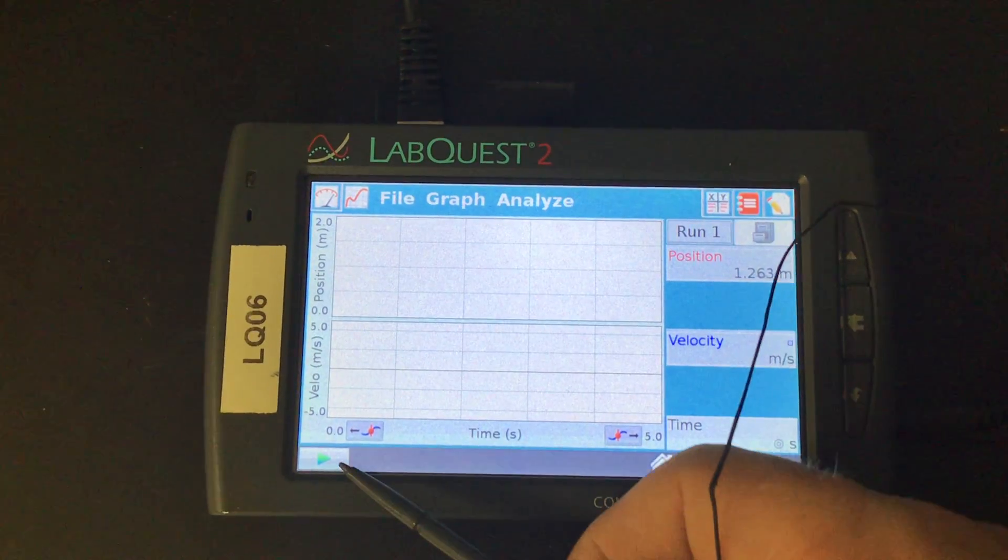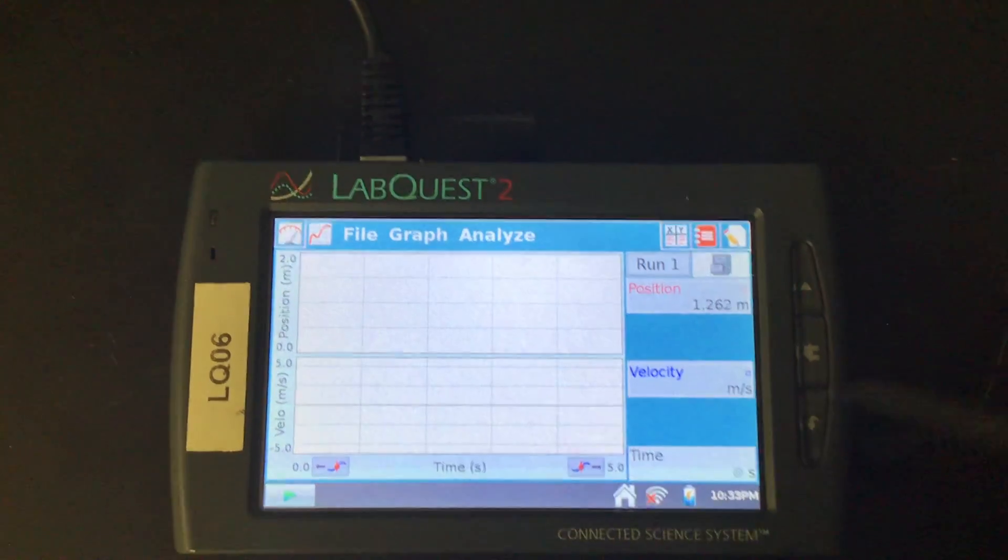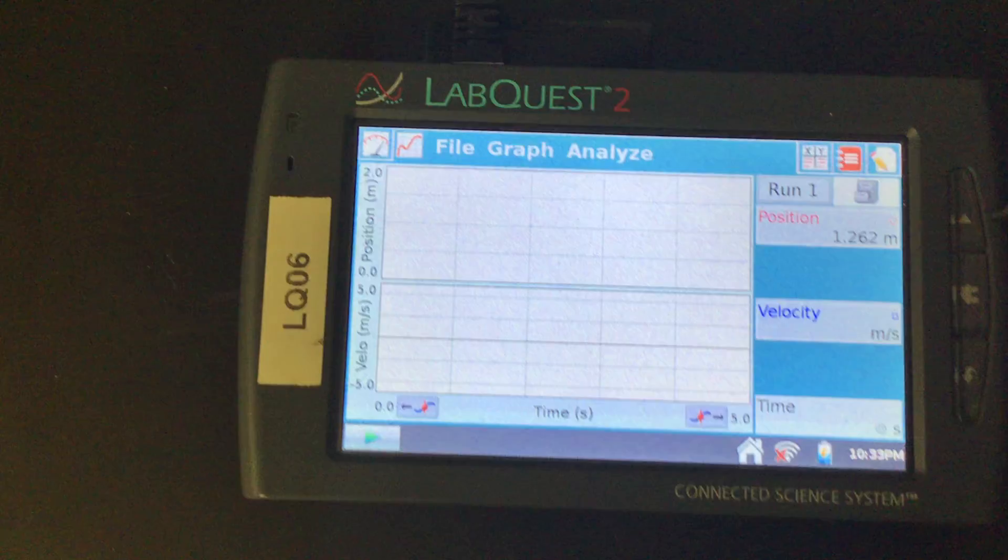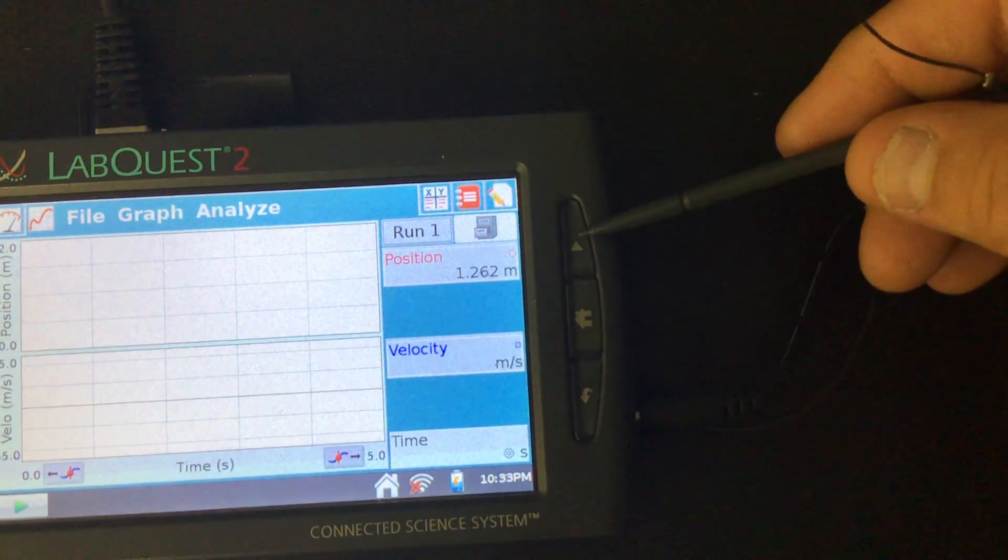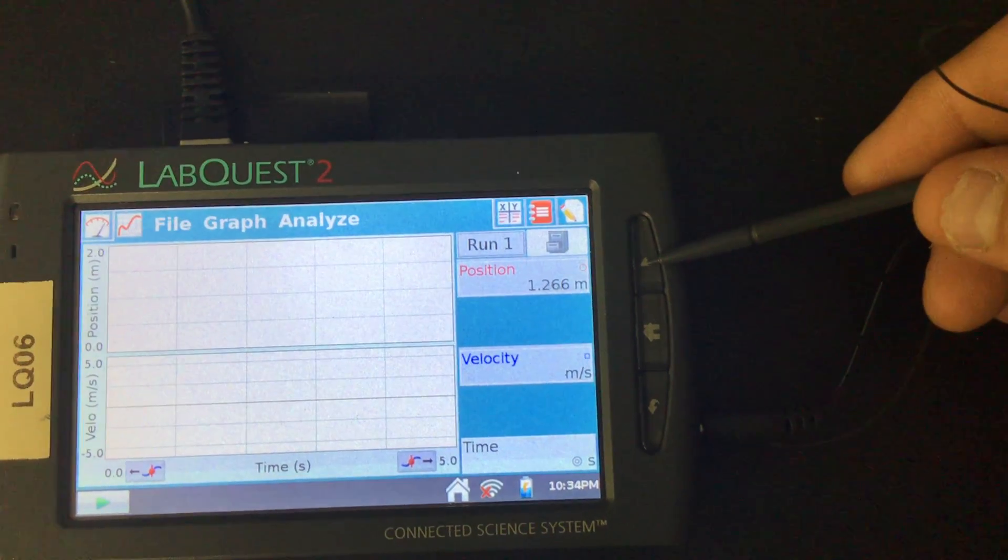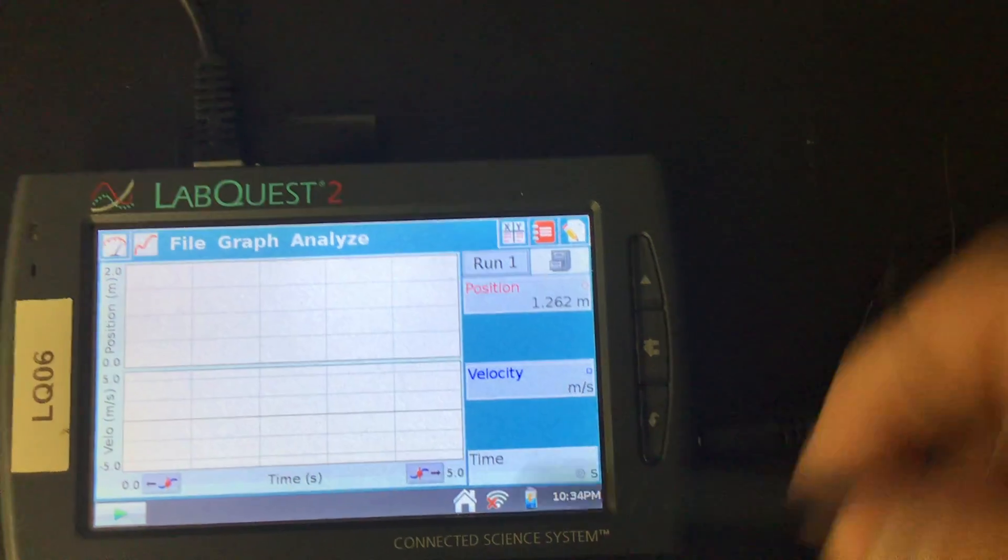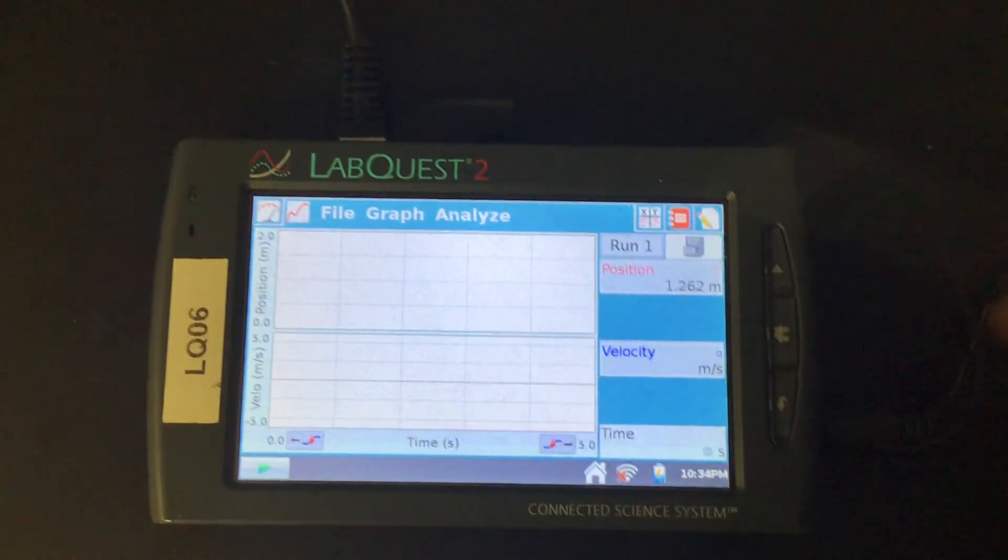Now there is a play button over here that's in green. I would choose not to use that. Instead, I would use the play button over here. The reason is this is a physical button that you can feel the click. It's actually a start and stop button, so you click it once to start, once to stop, and it's much more accurate than trying to tap at this little guy over here.